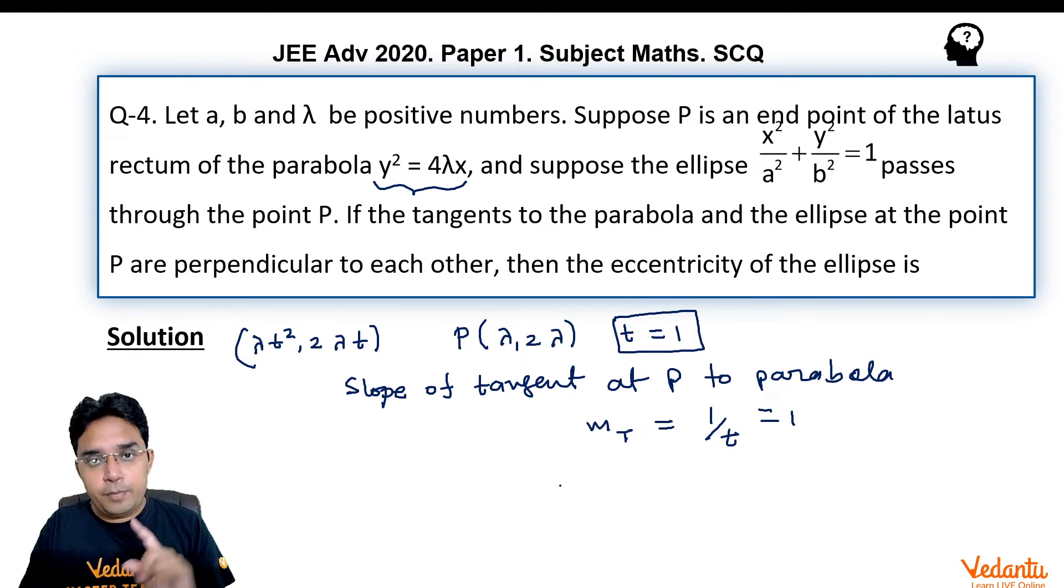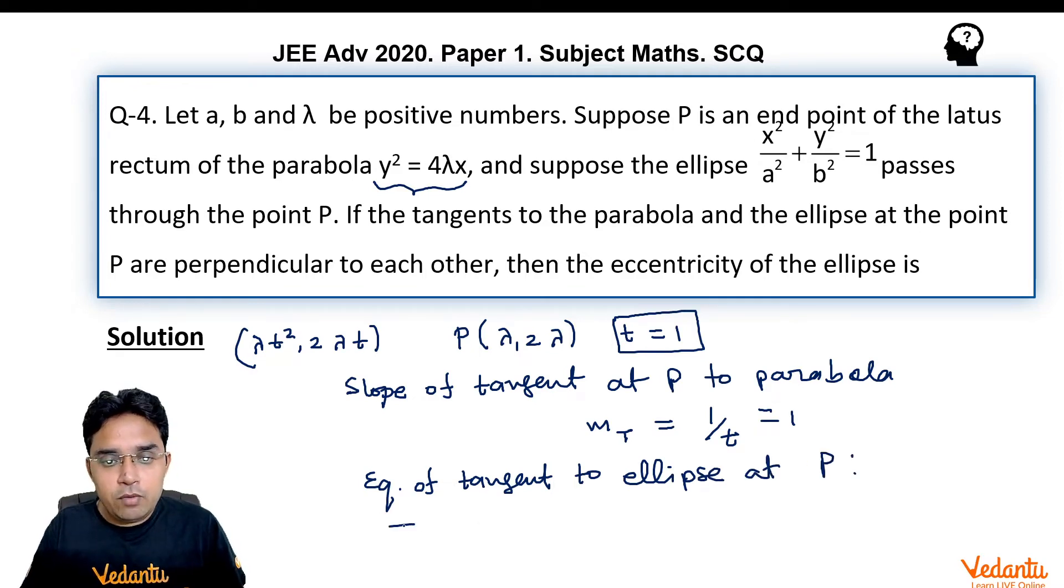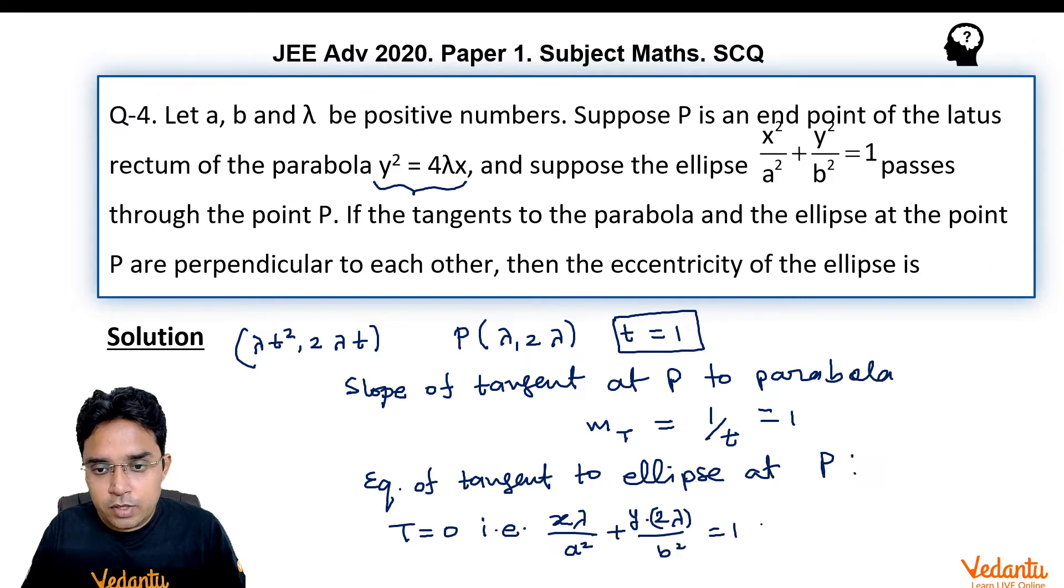Now, to find slope of tangent at P point to this ellipse, I will write the equation of tangent. Equation of tangent to ellipse at P point will be t = 0, which means it will be x·λ/a² + y·2λ/b² = 1. From this we can write the slope of tangent at P point to ellipse by just looking at the coefficient of x and y and this comes out to be -b²/2a².